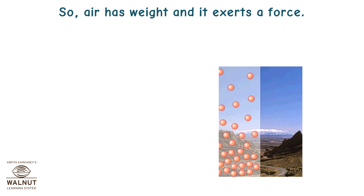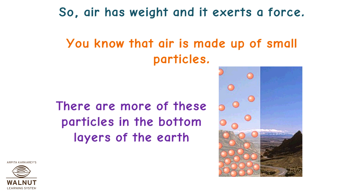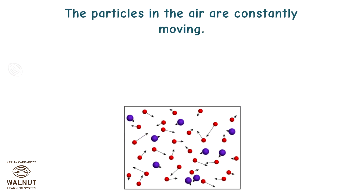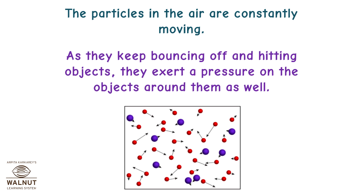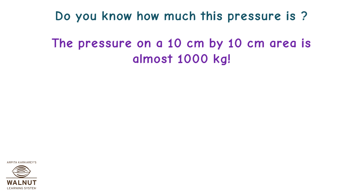There is a big column of air above our heads, so air does exert a lot of pressure. This is known as atmospheric pressure. Air has weight and it exerts a force. There are more air particles in the bottom layers of the Earth. The particles in the air are constantly moving, and as they keep bouncing off and hitting objects, they exert pressure on the objects around them. The pressure on a 10 cm by 10 cm area is almost 1000 kg.